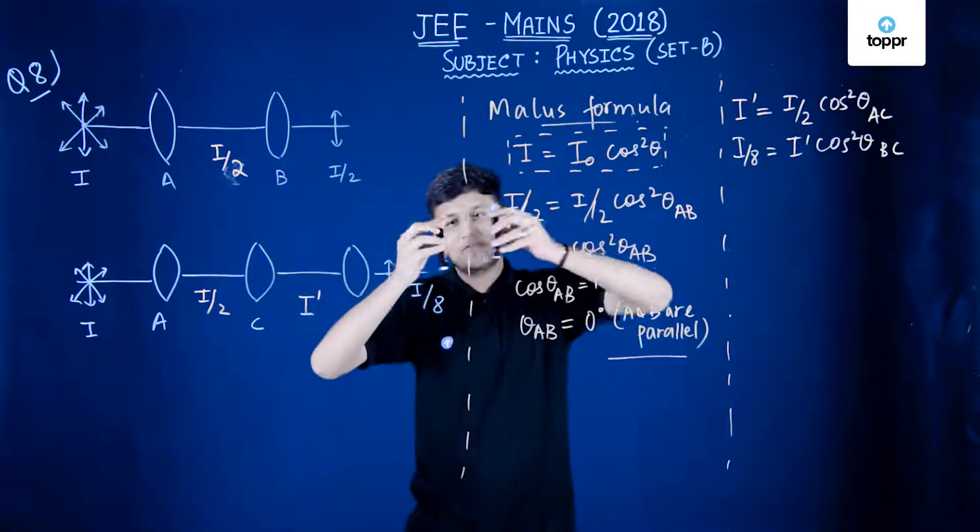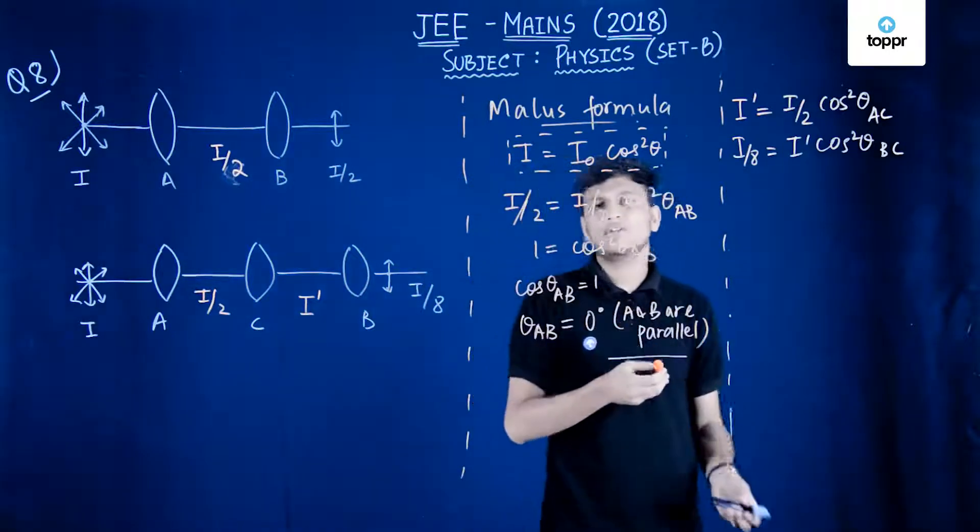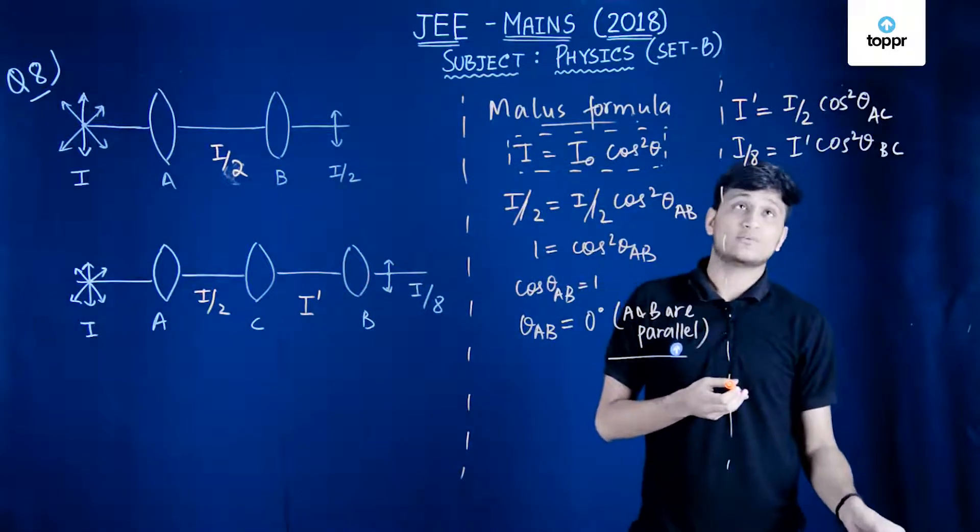Because they're both parallel. So if C makes an angle of 45 degrees with A, it would obviously make an angle of 45 degrees with B as well.